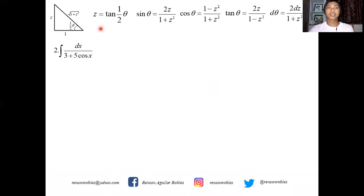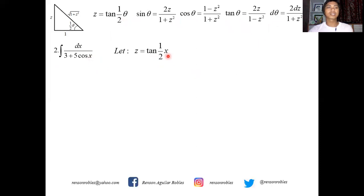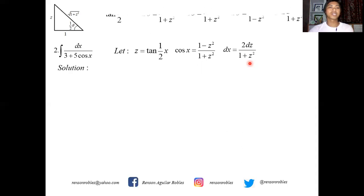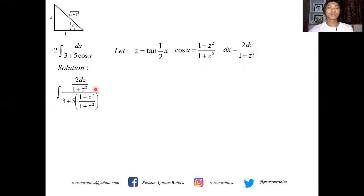Going back to our problem, we now have all the substitution properties listed. We integrate dx over 3 plus 5 cosine x, letting z equal tangent of half x since the variable of integration is x. Cosine x becomes (1−z²)/(1+z²) and dx becomes 2dz/(1+z²). Substituting into the integral, the numerator is 2dz/(1+z²) and the denominator is 3 plus 5 times (1−z²)/(1+z²).